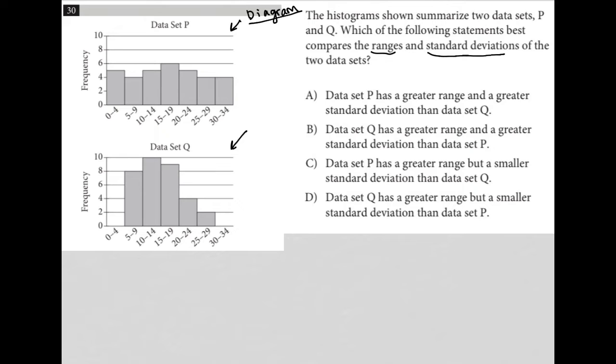So one, what is a range? A range is the difference in the high value to the lowest value - high minus low. That's our range. So data set P has a range, data set Q has a range.